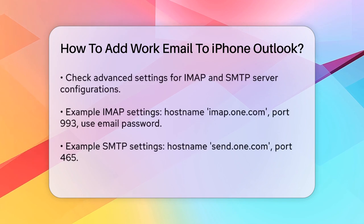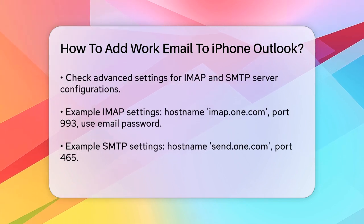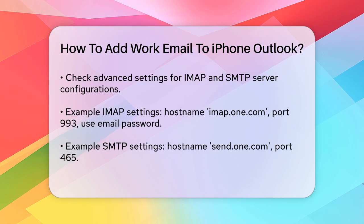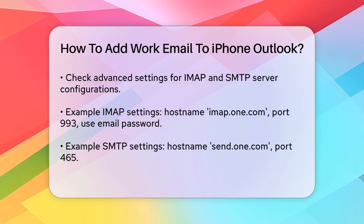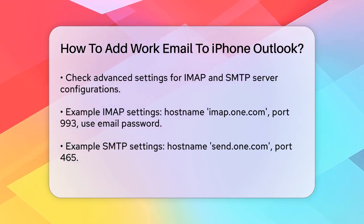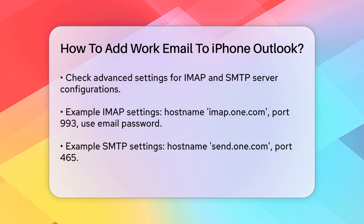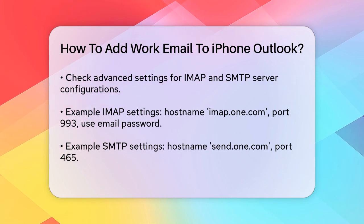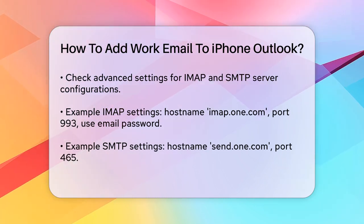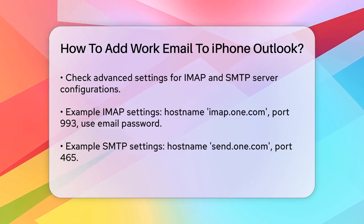After entering your credentials, you might need to use advanced settings. Make sure your IMAP and SMTP server settings are correct. For example, if you're using an IMAP account, the IMAP host name might be something like imap.one.com with a port number of 993, and the IMAP password will be the same as your email password.